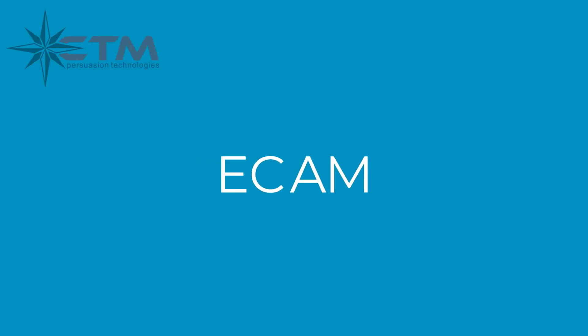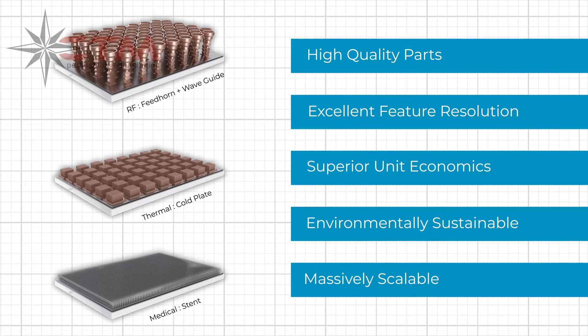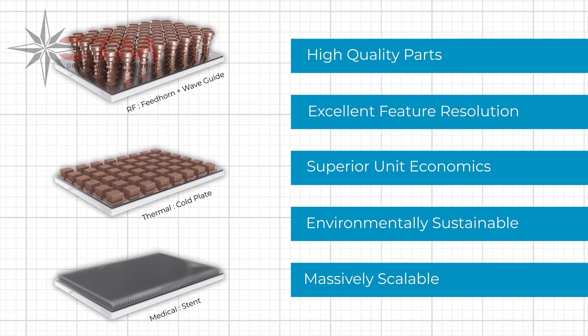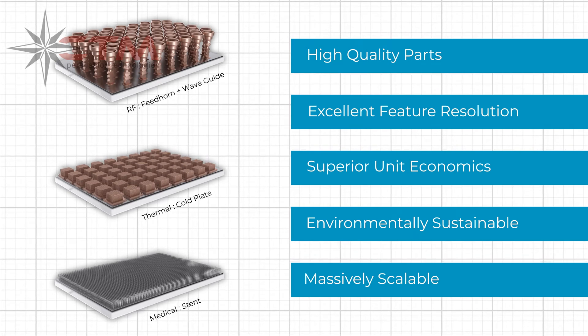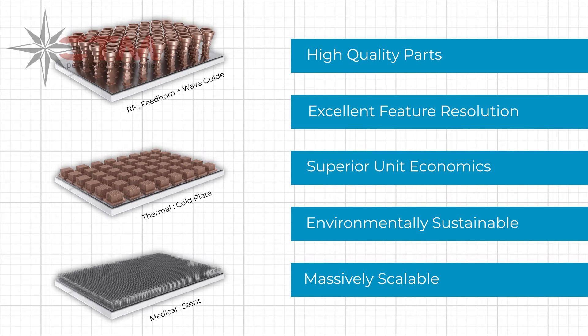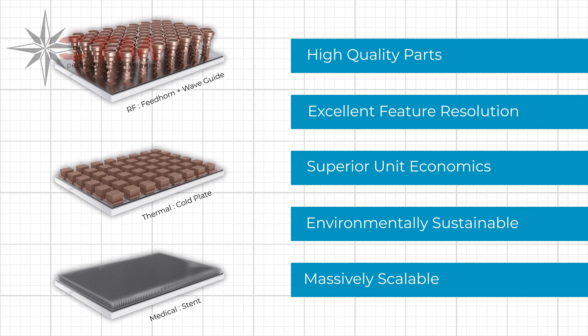ECAM is a radically different metal 3D printing technology that produces high-quality parts with excellent feature resolution and superior unit economics that outperform traditional manufacturing. ECAM is an environmentally sustainable manufacturing technology that scales for mass production.